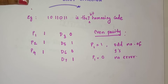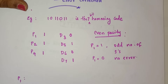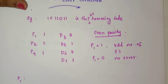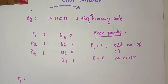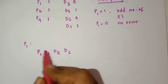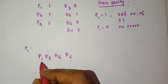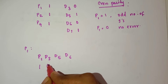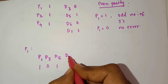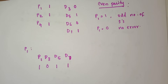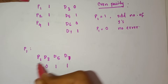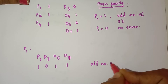First we want to check the P1 parity bit to find if there is an error. As discussed in my previous video, the rule is: check 1 bit, skip 1 bit, check 1 bit, skip 1 bit. That means P1, D3, D5, D7 are the bits used for checking P1. Here P1=1, D3=0, D5=1, D7=1 — that means there is an odd number of 1s.